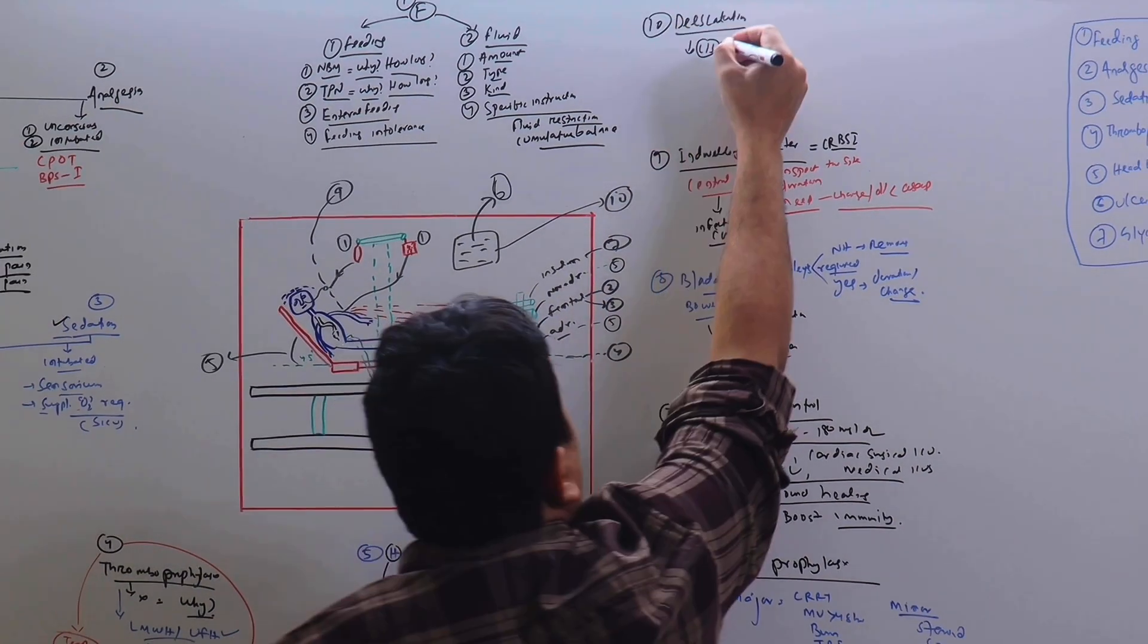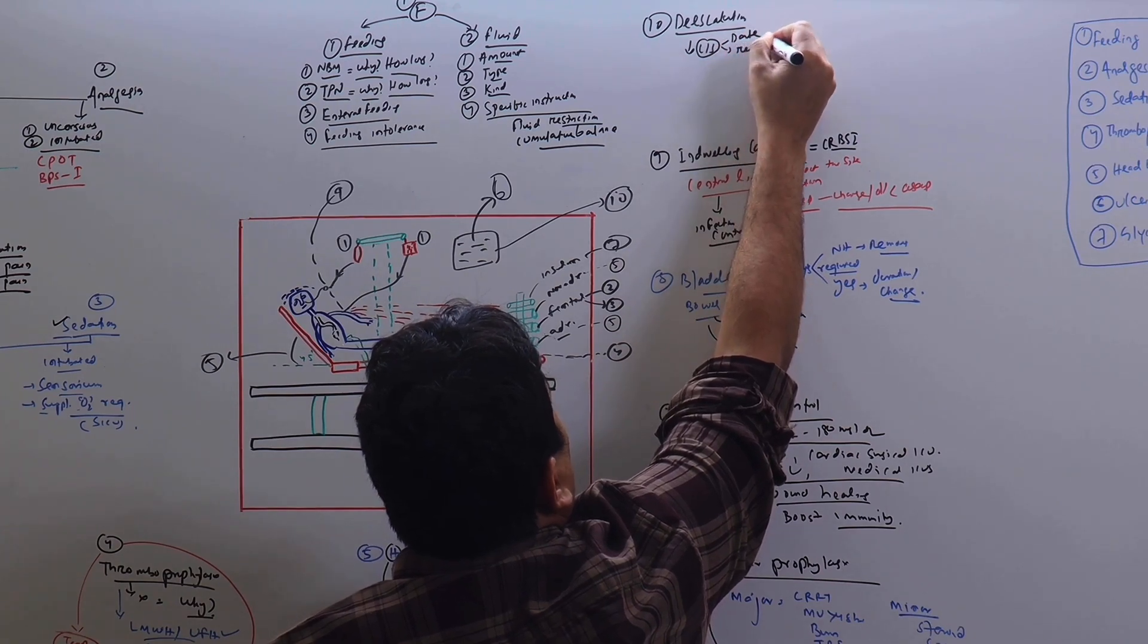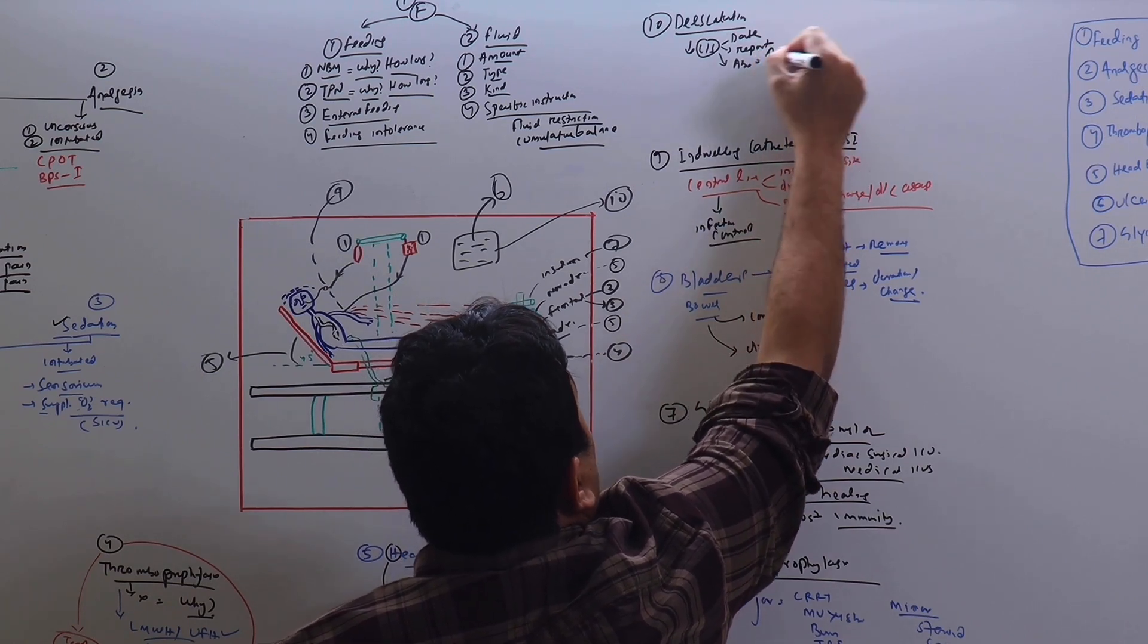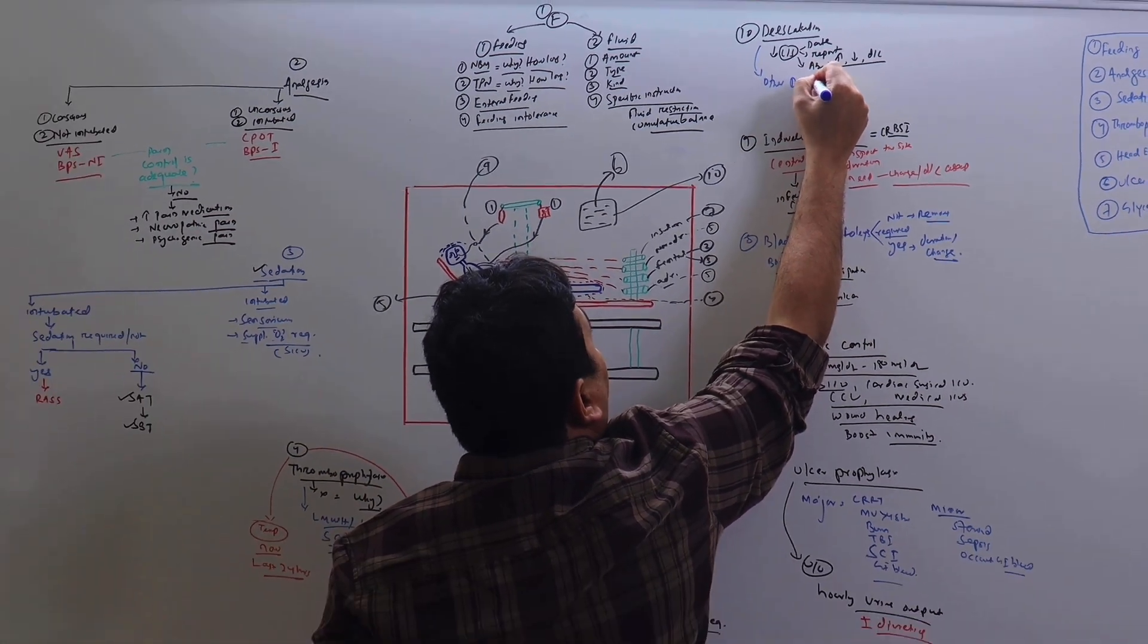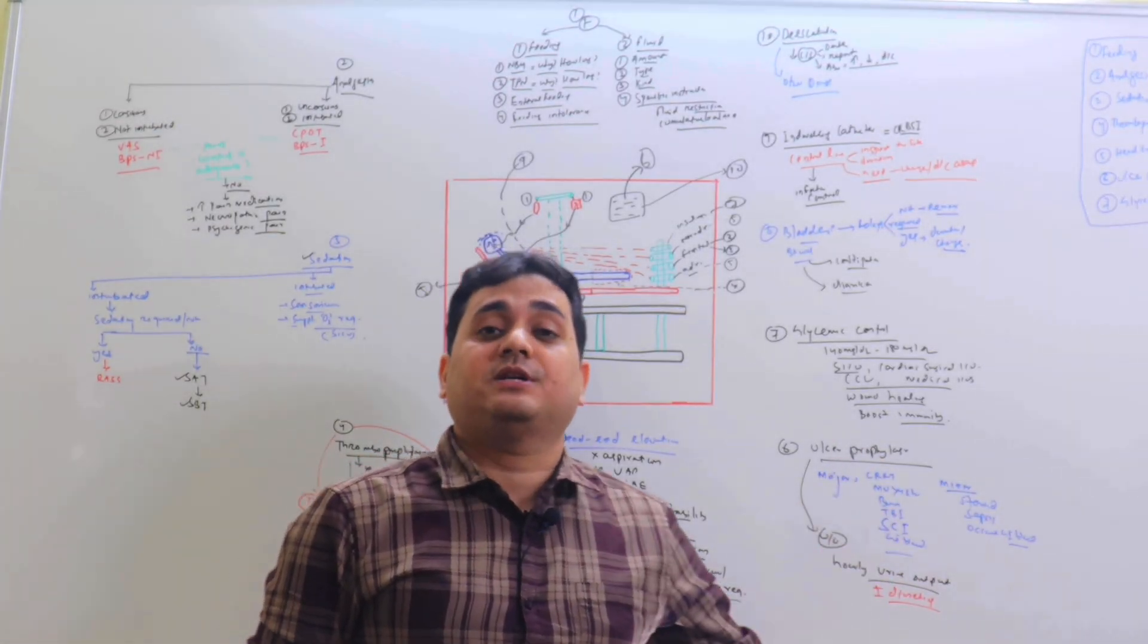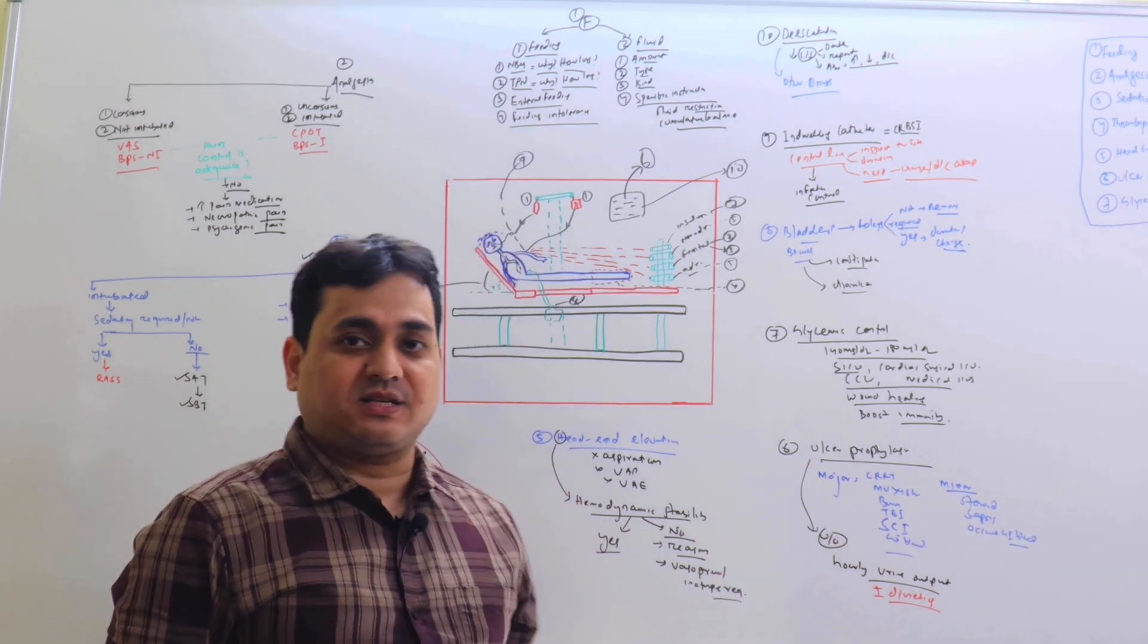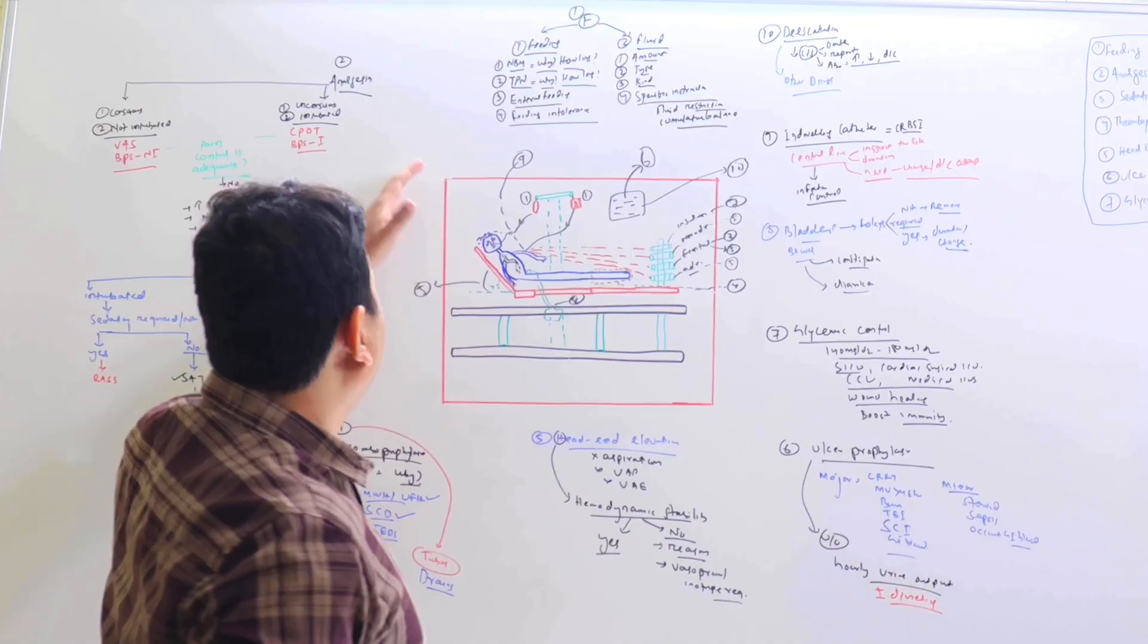Number ten is de-escalation. You need to write the date when the culture was sent, the report, and based on the report whether antibiotics need upgradation or de-escalation or discontinuation—that you need to mention here. Apart from antibiotics, go through the medication card and find out what are the other drugs that are going on in this patient which were relevant and required previously, but right now are not required. Those drugs you need to strike out from the medication card. So you have to avoid polypharmacy.